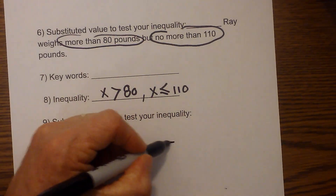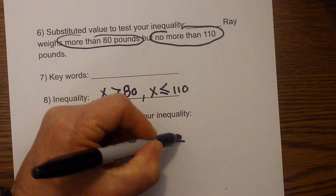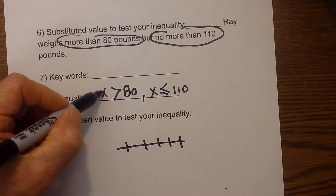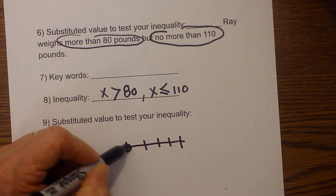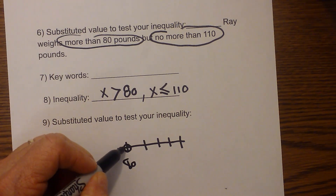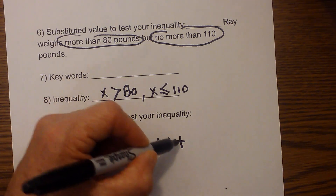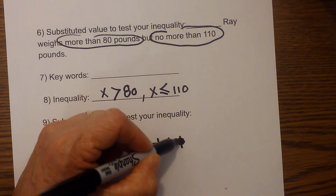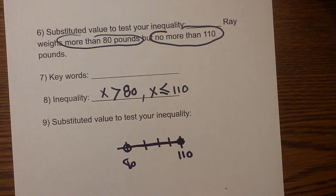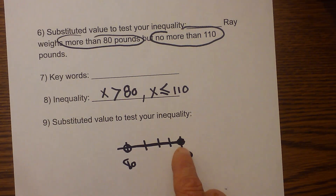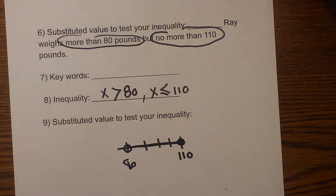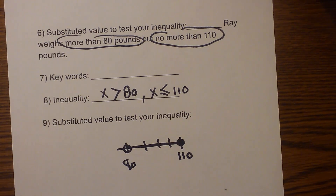On the number line, at 80 we draw an open dot since it's greater than — not including 80. We draw a line to 110, where we close the dot, showing that 110 is included. I hope that helps with converting words to inequalities. Thanks for watching — Moomoo Math uploads a new math and science video every day, please subscribe and share.